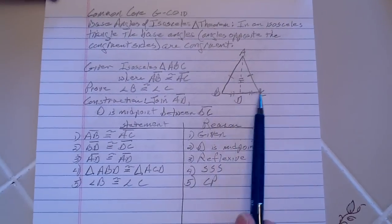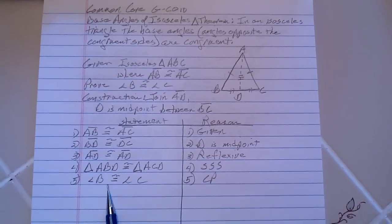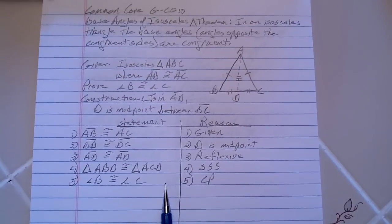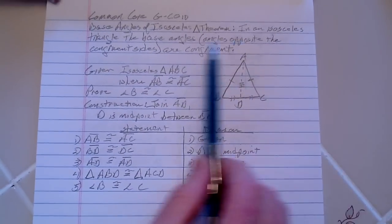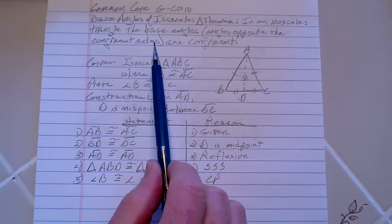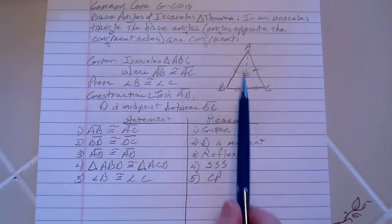this angle B and angle C are congruent because there are corresponding parts. Therefore, we have now proven that in the isosceles triangle, the base angles, these base angles that are opposite the congruent sides, are congruent.